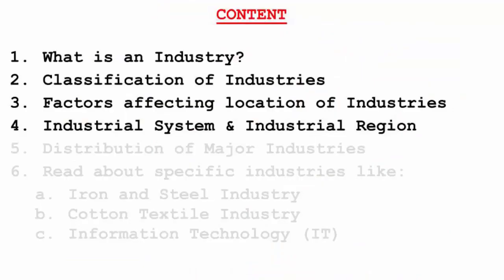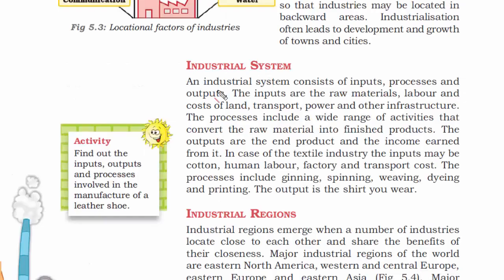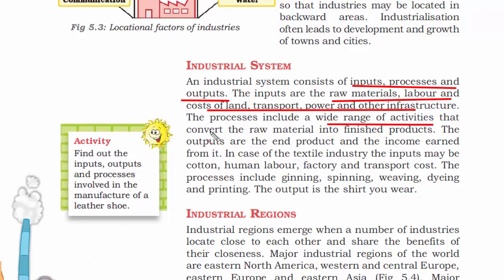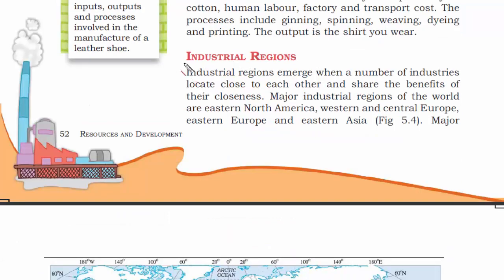The next topic is industrial system. Like in agriculture, a system comprises inputs, processes, and outputs — it is the same in industrial system. The inputs are raw materials, labor, cost of land, transport, power, and other infrastructure. The process refers to the wide range of activities that convert the raw material into finished product. Output refers to the income or profit earned over the final product.